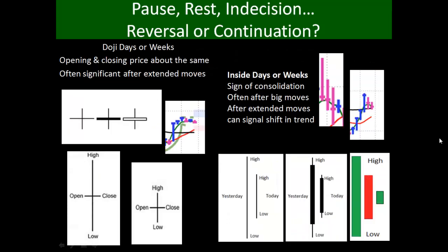Two other helpful techniques are doji days or weeks and inside days or weeks. A doji is simply when the opening price and the closing price are about the same — oftentimes you'll see this after a significant move up or down. The longer the move, the more significant the doji is. Here's a wide range doji with the open and close at just about the same, and then here's a narrow range doji. If you use candles, this is what it might look like as a candle.